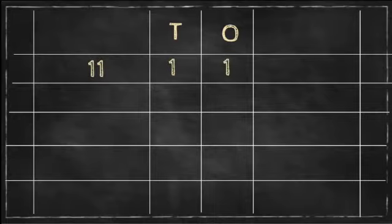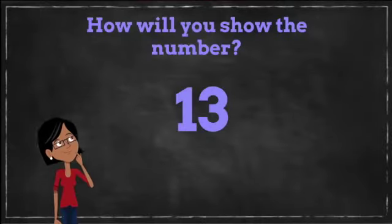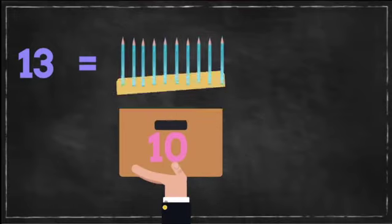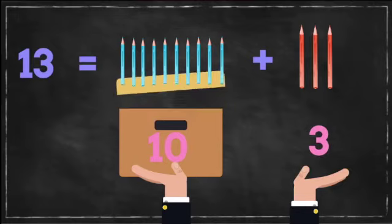Now if I have to show number 13, what will I do? Can you tell me? One, three, thirteen. For T I have 1 again and for O I have 3. So what will I do? I will pick up a box of 10 pencils, 1 ten in one hand, and 3 pencils in the other hand.